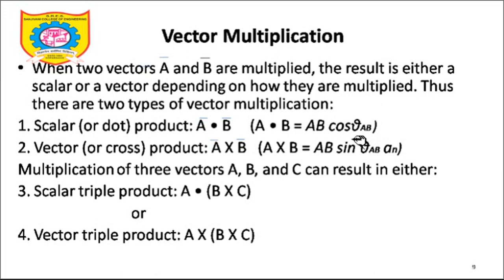So A̅ dot B̅ is equal to AB cos(θ_AB), where theta is the angle between two vectors A and B. Once we need to calculate the angle between two vectors, we can directly write cos(θ_AB) = (A̅ dot B̅) divided by AB, and we can calculate the angle at any moment. Finding the angle between two vectors is made easy using the definition of dot product.